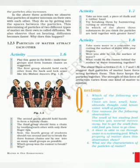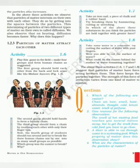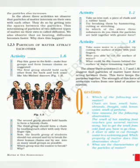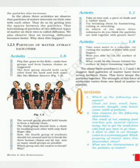The next point is that particles of matter attract each other. Three activities are given for this. First is a field activity involving four chains of people: in the first chain people are closely arranged, in the second somewhat far, in the third just touching fingers, and in the fourth not touching at all. The fourth chain is allowed to break the first three. In the next activity, take three materials — chalk, rubber band, and iron nail — and try to break them by hammering, crushing, or stretching. The chalk will break easily, the rubber band will break when stretched, and the iron nail will just mold or bend.